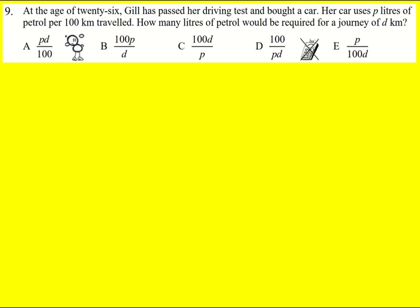We're told that Gill's car uses p liters of petrol per 100 kilometers traveled. That means it's going to be p over 100 liters per kilometer, because it's p per 100. So I divide by 100, that's going to tell me how much per kilometer.